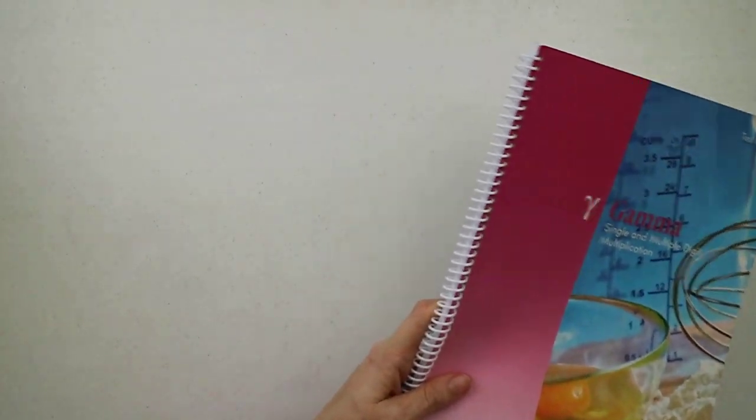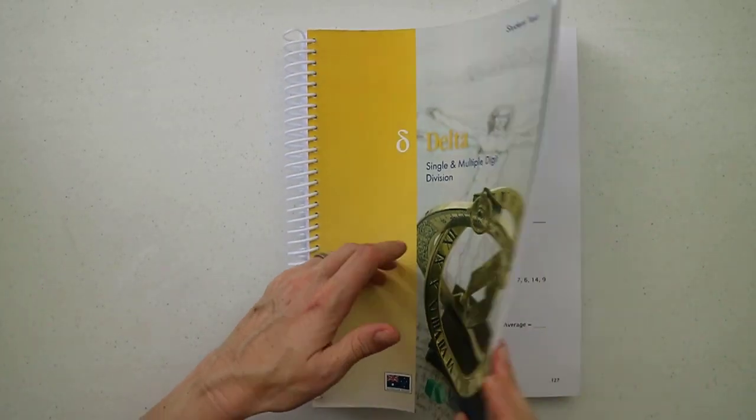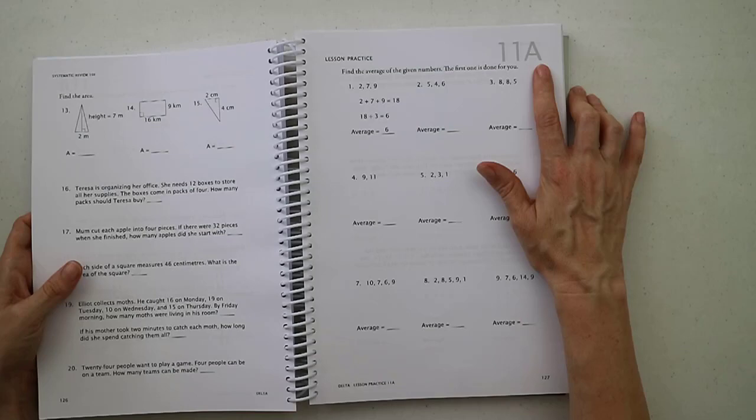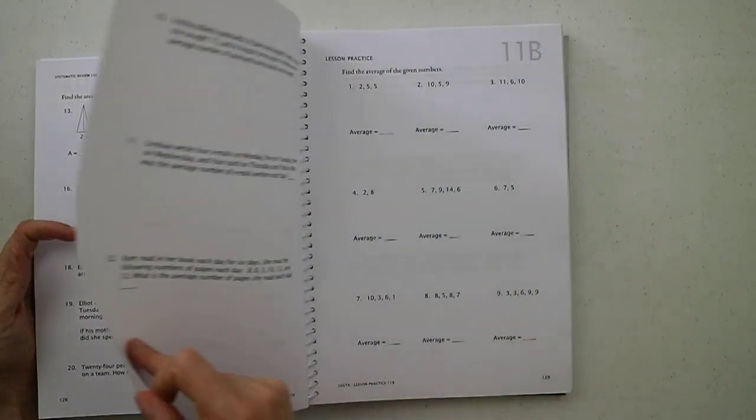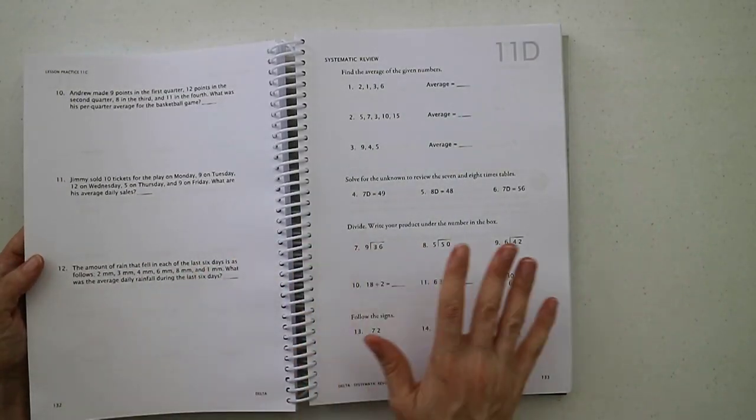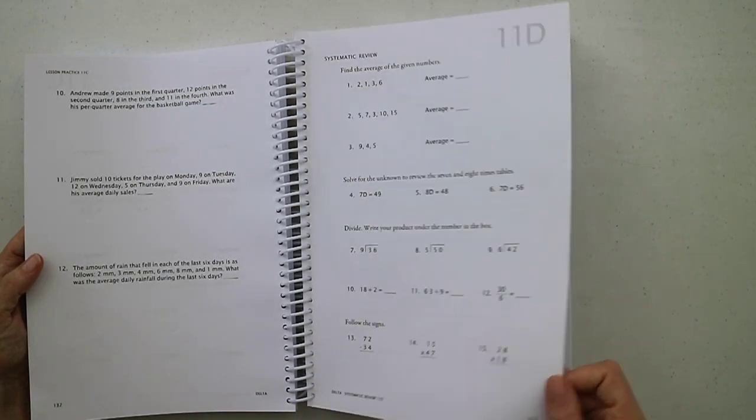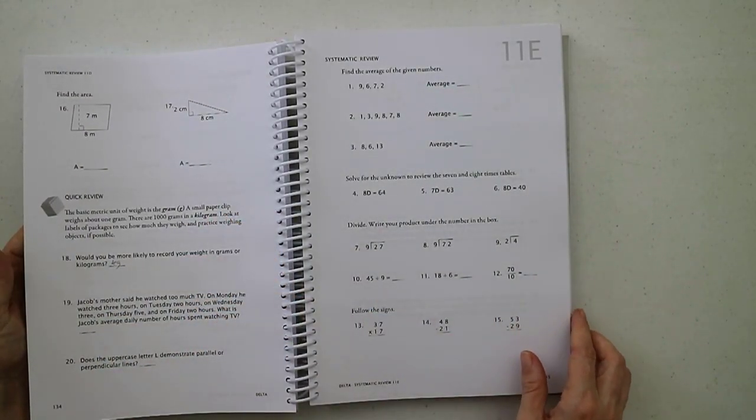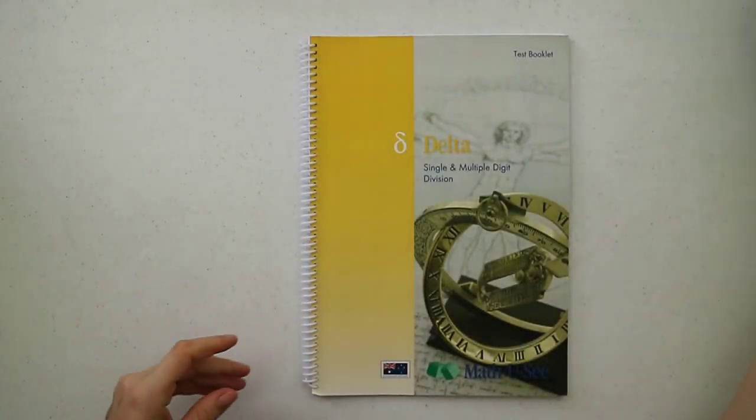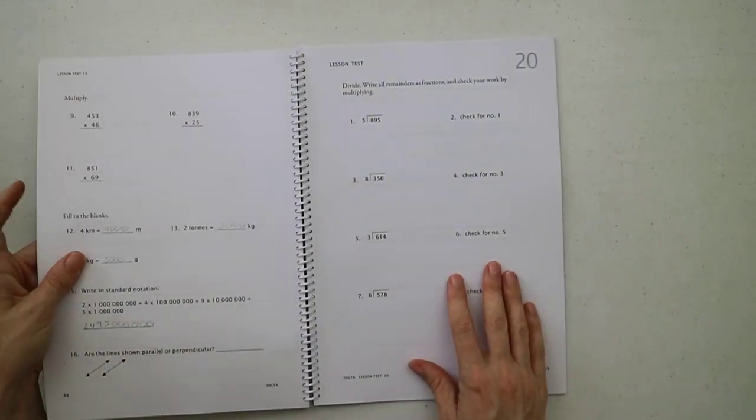This is Delta, this is single and multiple digit division. Again you can see that it's going to be pretty much the same layout. For this one A, B, and C will be reviewing the lesson, and then you've got the word problems, you've got the sums, you've got the same sort of stuff. Then D, E, and F is systematic review. In this one they're talking about averages, solving for the unknown, we're doing division, doing some subtraction, we're doing some area, and we're doing some quick reviews of weights. Again pretty straightforward and easy to follow.